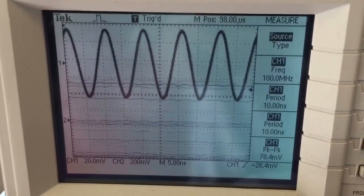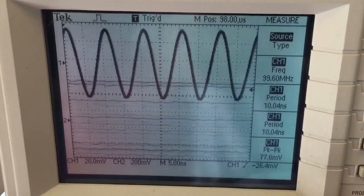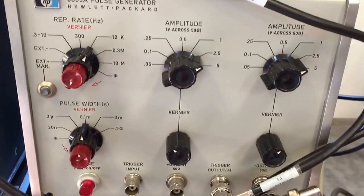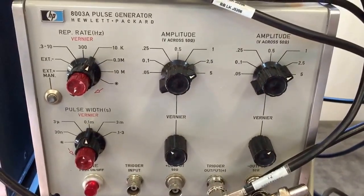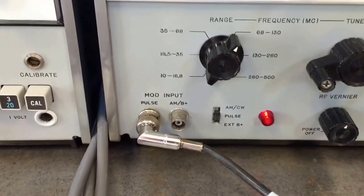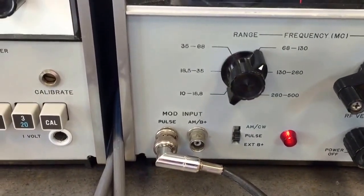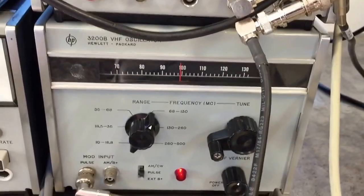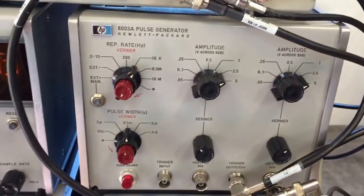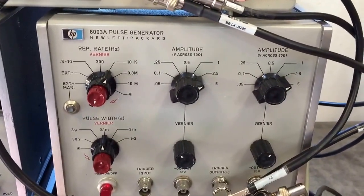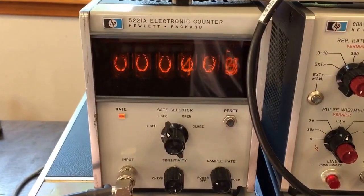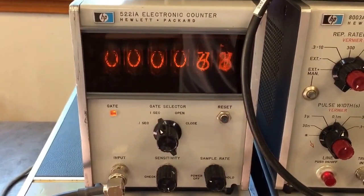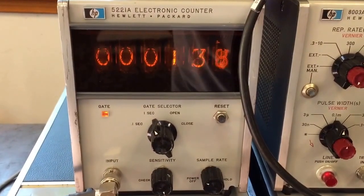Here we have a pulse generator. This pulse generator output is going to the modulator input for the pulse on the VHF generator, so this thing is running at audio frequencies.